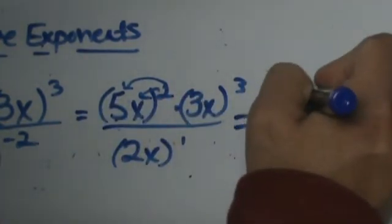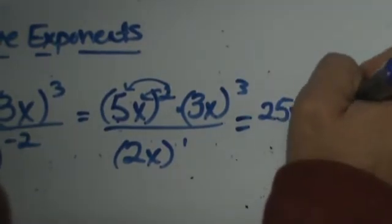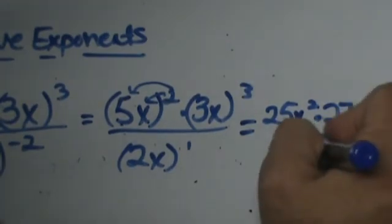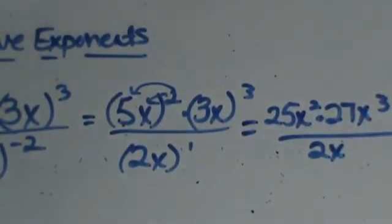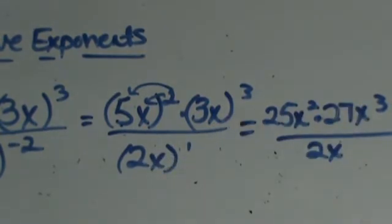Then you end up with x squared times 3 cubed is 27 times x cubed all over 2 to the first power because that is not going to change. Let me just raise to the first so let's do a little cleaning up.